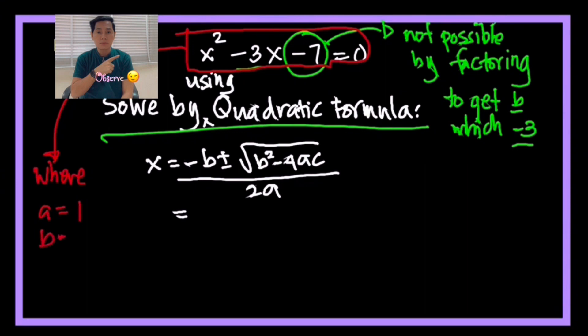Now look at this. We are going to find out a, b, and c. So a is equal to 1, b is equal to negative 3, and c is equal to negative 7.